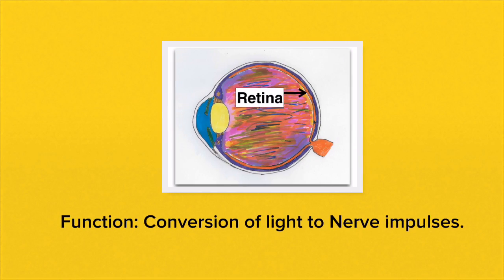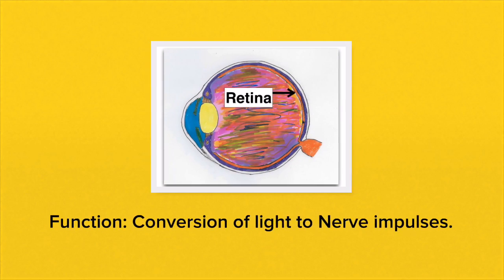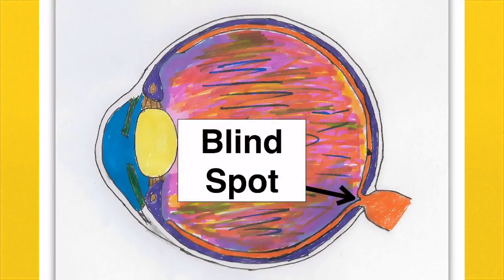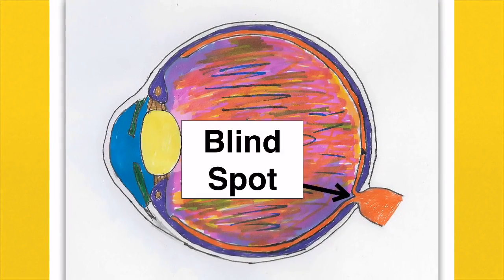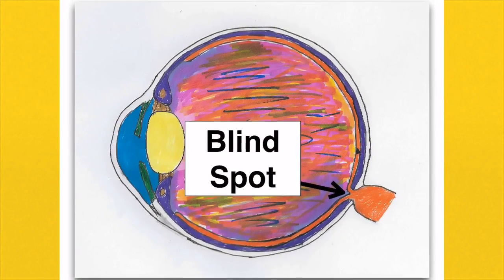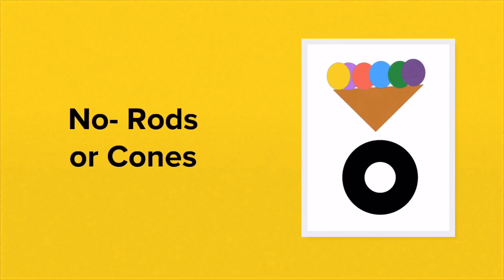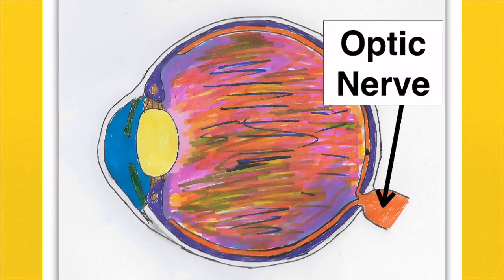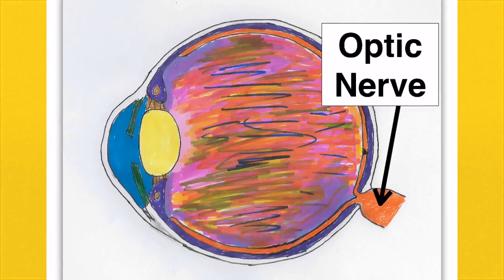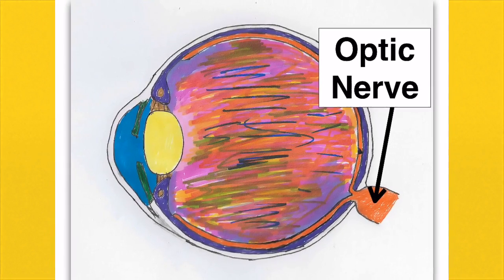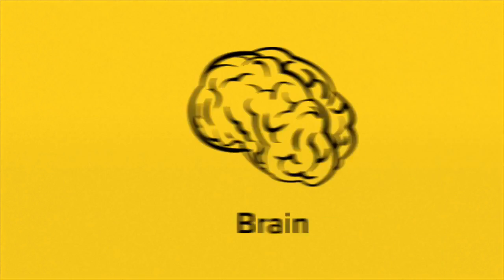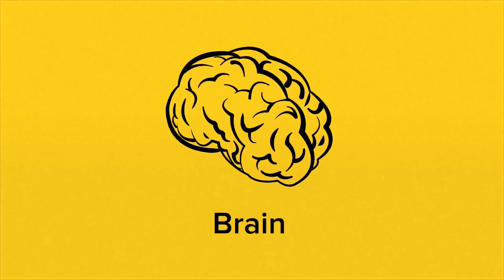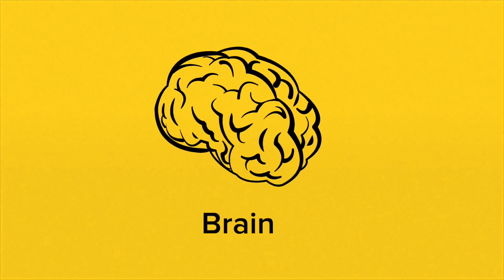This is really important: the function of the retina is the conversion of light to nerve impulses or electrical impulses. The last part of the eye to know about is the blind spot — the part of the retina where there are no rods and no cones. It's the exit point for the optic nerve, which is one of those sensory neurons that relays nerve impulses or electrical impulses to the brain.